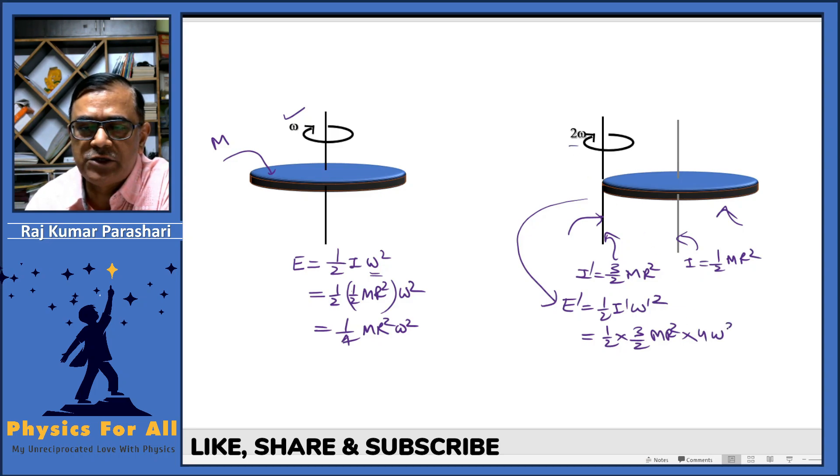This is 3/4 M R^2 * 4 omega^2, which equals 12 * 1/4 M R^2 omega^2, which is 12 times the initial rotational kinetic energy.